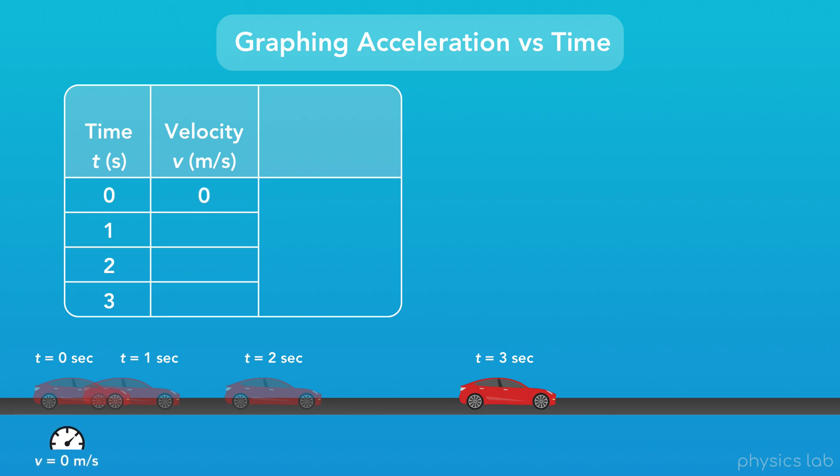And this is what we get. At 0 seconds, the velocity is 0 and the car isn't moving. At 1 second, the velocity is 5 meters per second. At 2 seconds, the velocity is 10 meters per second. And at 3 seconds, the velocity is 15 meters per second.